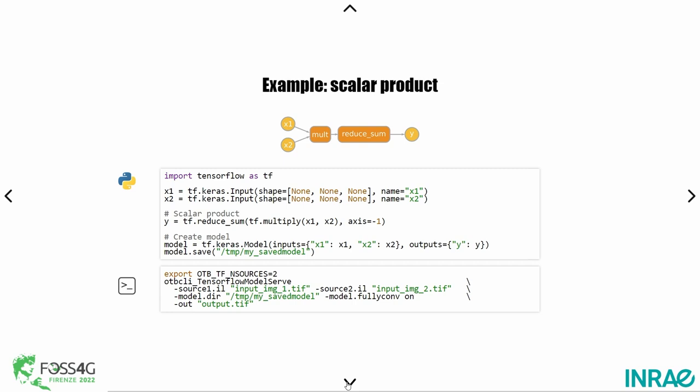Then, using OTBTF, you can use this model with two inputs, namely real-world images — for instance, two Sentinel-2 images. You can run the inference, meaning you can run the model over these images using all the complex pipelining of the Orfeo Toolbox, which deals with memory footprint automatically. So you just create your model and then put it in production. As simple as that.